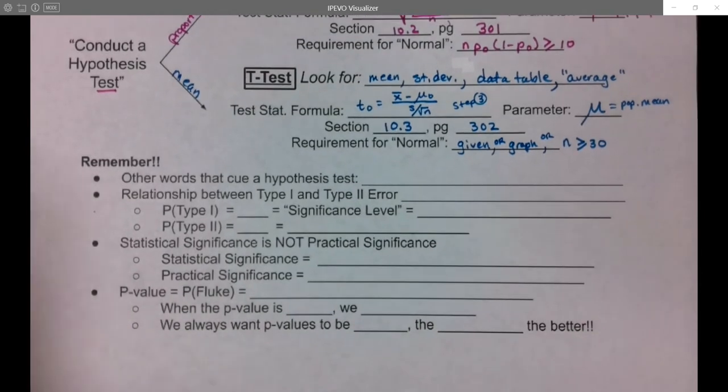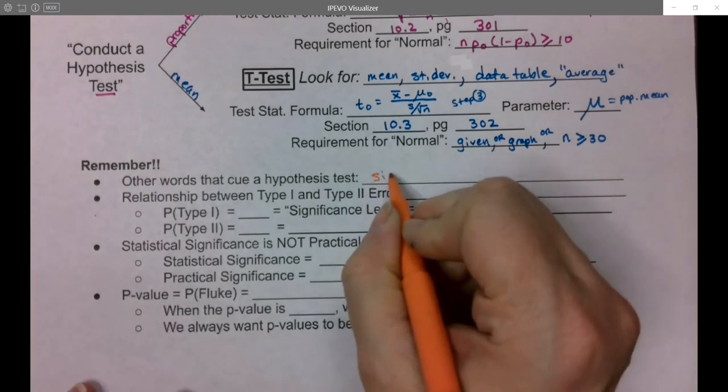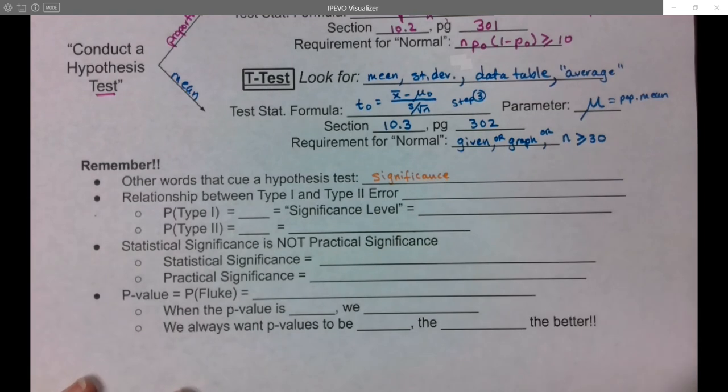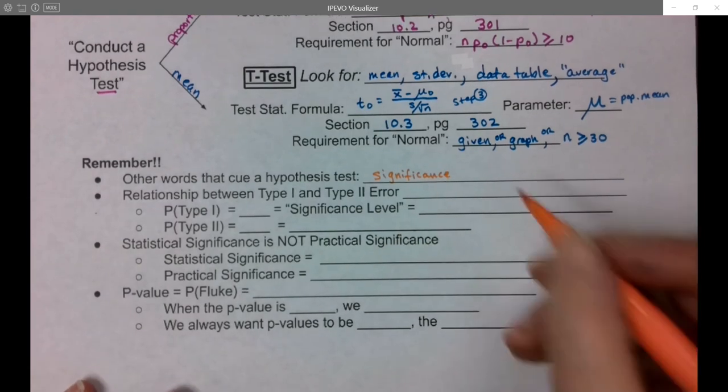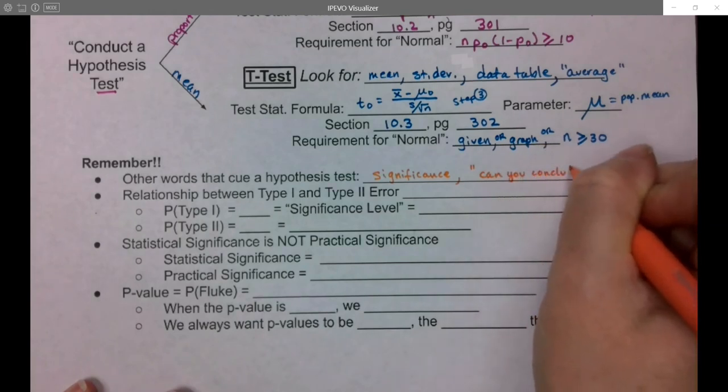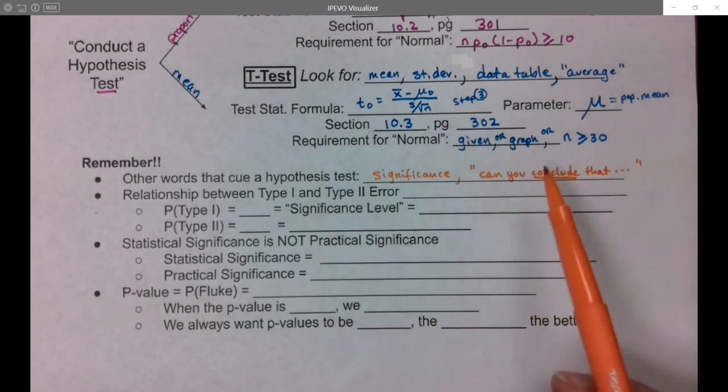There's a whole bunch of things to remember here, a lot of them from section 10.1. Other keywords that cue that it's a hypothesis test: you'll see the word 'significance' thrown around. Significance is a sign that you're talking about a test of significance, i.e., a hypothesis test. You'll see 'can you conclude that?' Well, conclusion implies you've run a test, so you're going to have to run that test to see if you can conclude that you should reject H₀ or not.